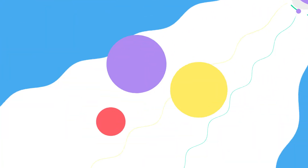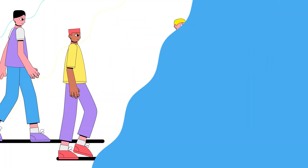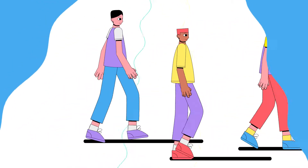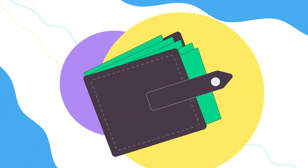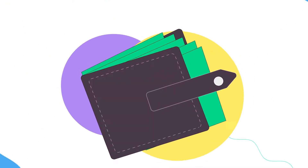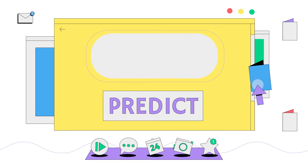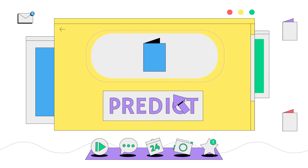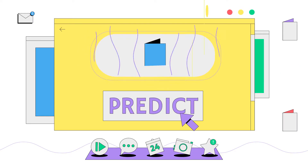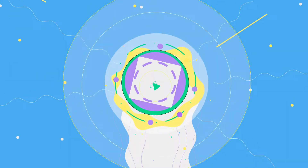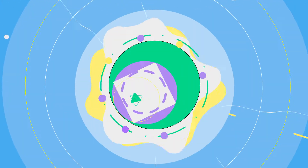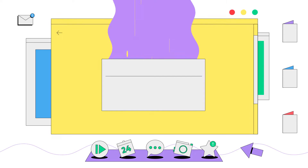For example, you can predict which leads are likely to convert, which customer is expected to churn soon, or even how much someone is willing to pay for your product. All you have to do is connect your historical data, click a couple of buttons, and your AI predictions will be ready in less than one minute.